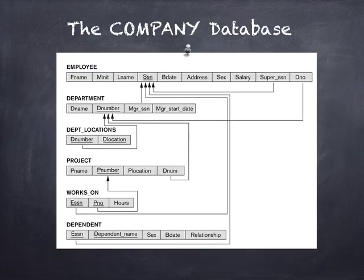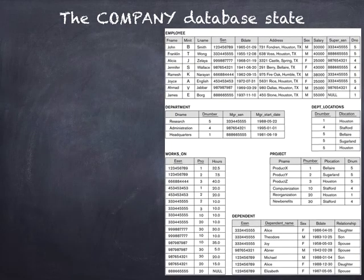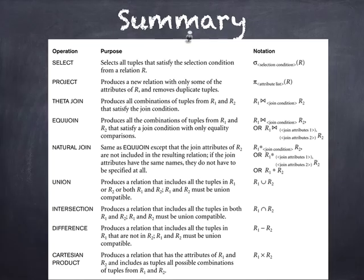If you remember the company database we've been working on — we did the mapping for it in the previous sections. I'm putting it here in the slides because I'll be working on examples next, reminding you of the keys for this schema and showing a sample of the database state. You'll also find a summary of all the operations we've been talking about. Let's go through some exercises, and you'll be prompted to do the rest at home.